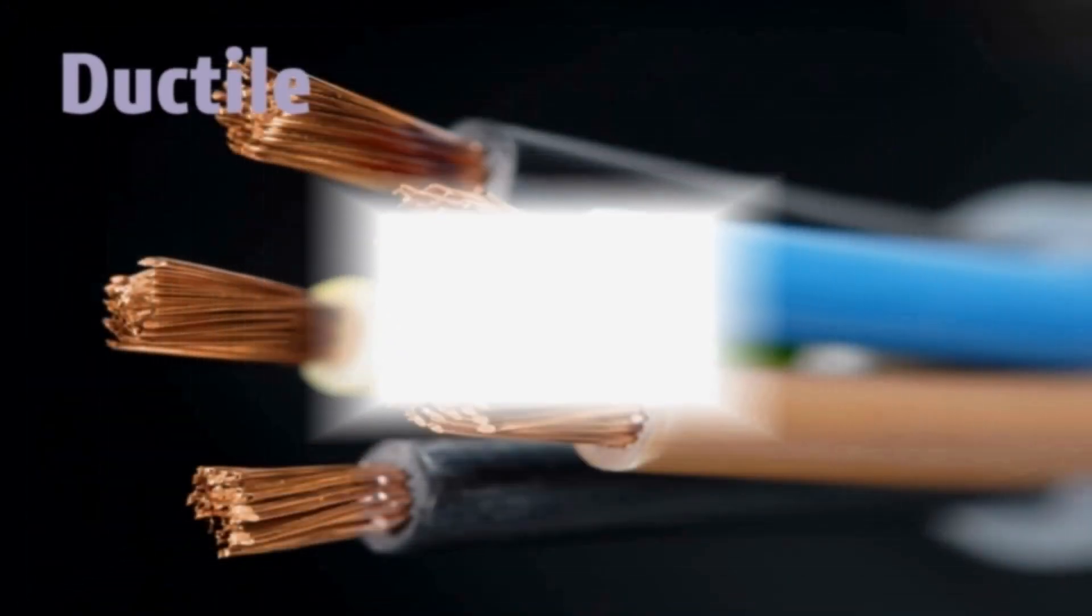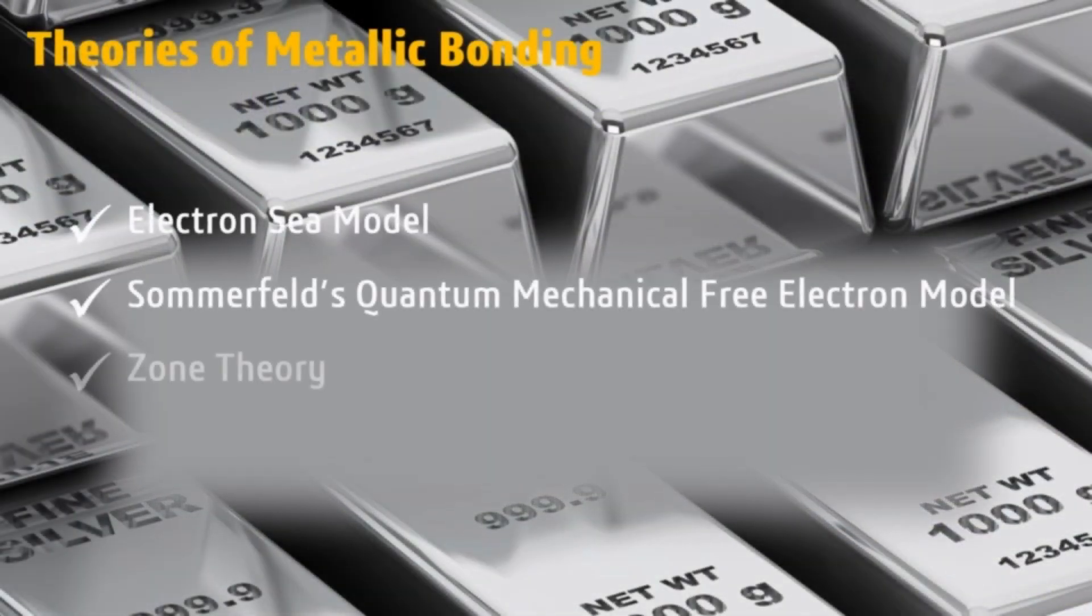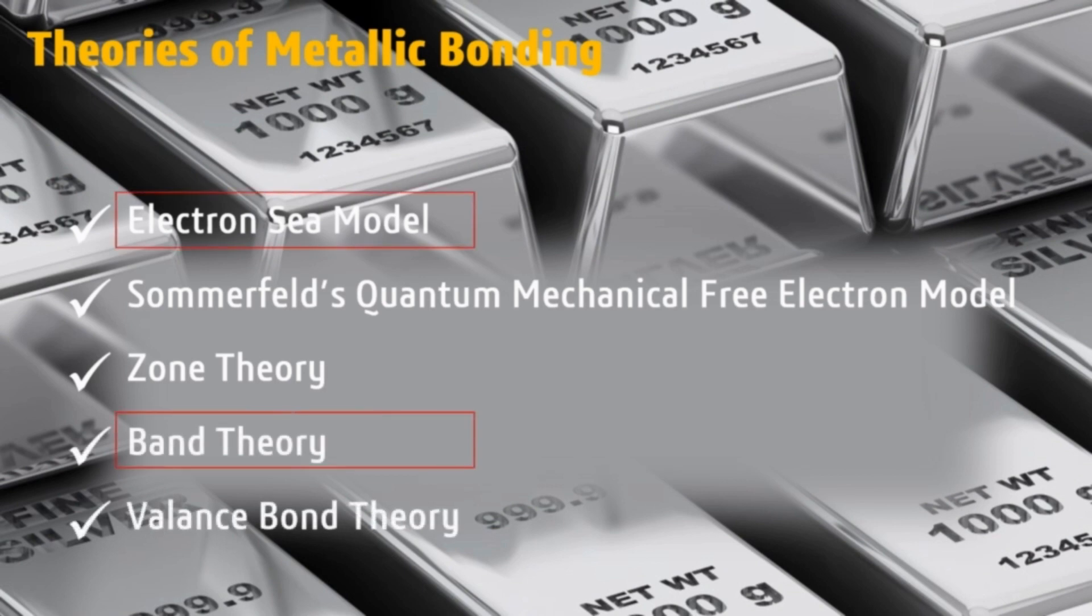There are different theories to explain metallic bonding like, electron sea model, Sommerfeld's quantum mechanical free electron model, zone theory, band theory, valence bond theory etc. We will discuss electron sea model, band theory and valence bond theory here.